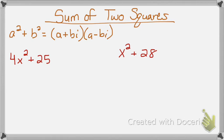Alright, so when I factor my first example, I'll take the square root of both terms and the square root of 4x squared is 2x, the square root of 25 is plus or minus 5.